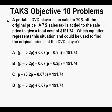Problem 4. A portable DVD player is on sale for 20% off the original price. A 7% sales tax is added to the sale price to give a total cost of $191.74. Which equation represents this situation and could be used to find the original price P of the DVD player? For this problem, we won't have to calculate anything, so it's really just about being able to translate English into algebra.